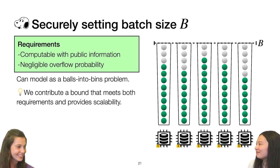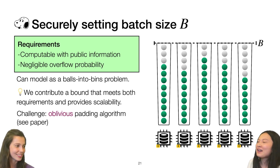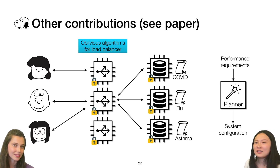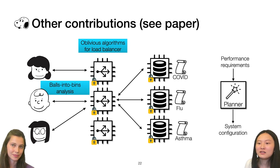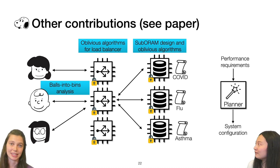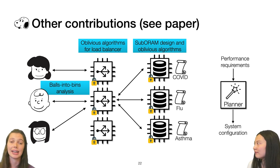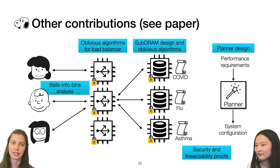Just like deduplication, we have to be careful about how we pad batches. Running on a hardware enclave means we must introduce an oblivious padding algorithm so we do not leak anything about batch size or duplicates. We discuss these algorithms and our balls-into-bins bound in detail in the paper. We also discuss our suboram design, where we take advantage of the load balancer's deduplication so that suborams receive batches of distinct requests and can process them in a way optimized for throughput. Additionally, we contribute a planner that takes performance requirements as input and outputs a system configuration — given latency and throughput requirements, it tells you how many suborams and load balancers you need. We also prove security and the linearizability of the system.